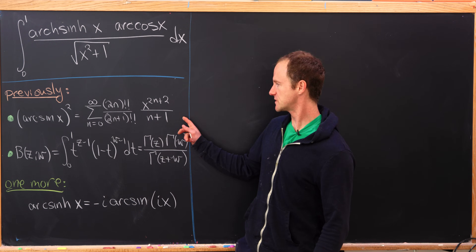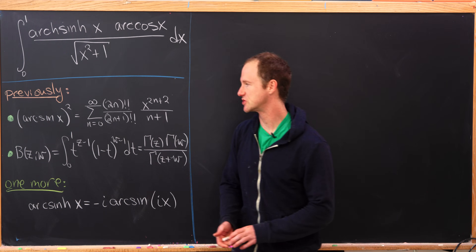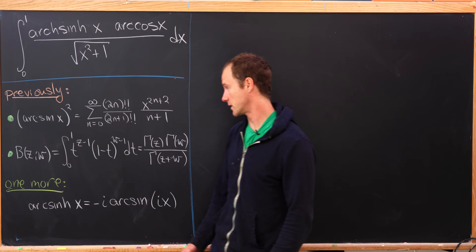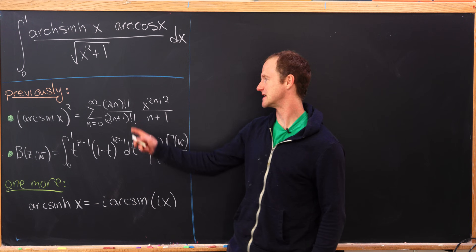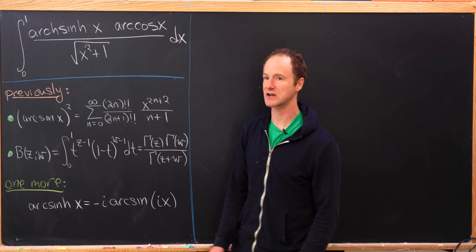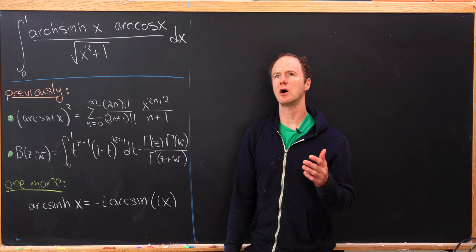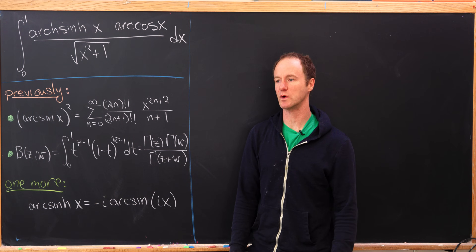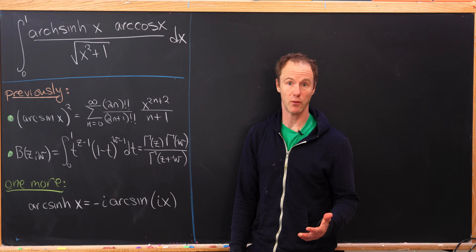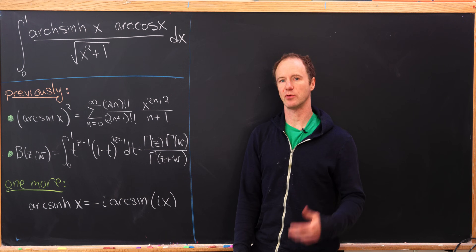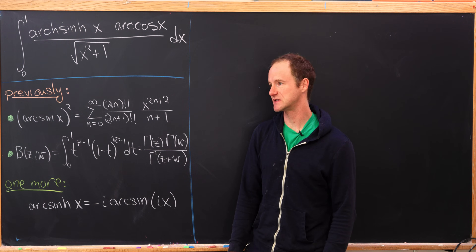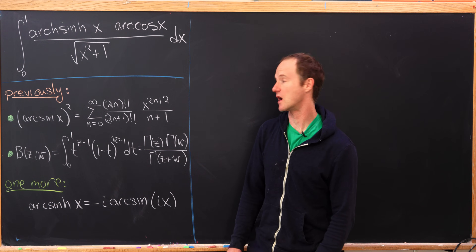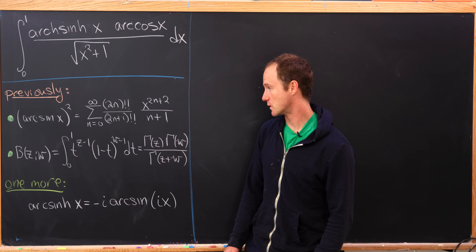The first is the power series expansion of the arc sine of x squared. It involves these nice double factorials. A double factorial is a descending product where you skip one — so 6 double factorial is 6 times 4 times 2. There's a similar formula for odd numbers as well.